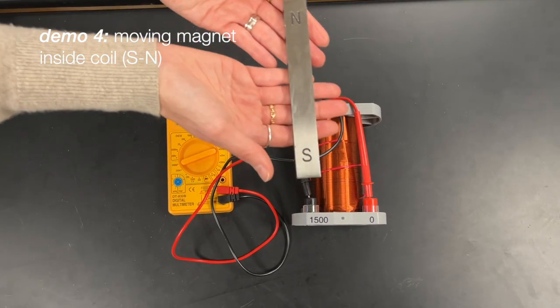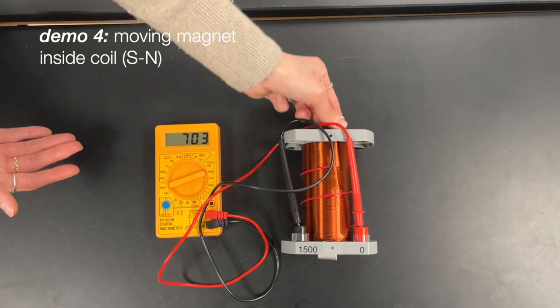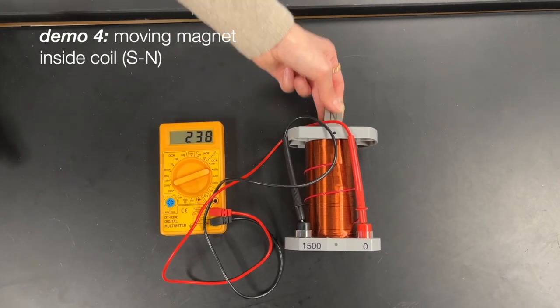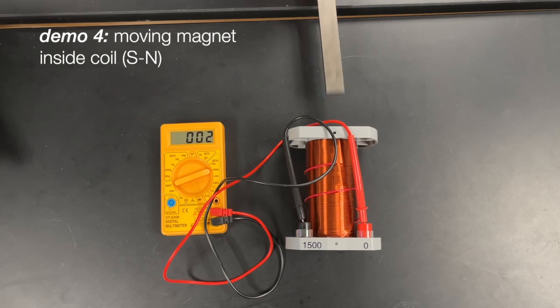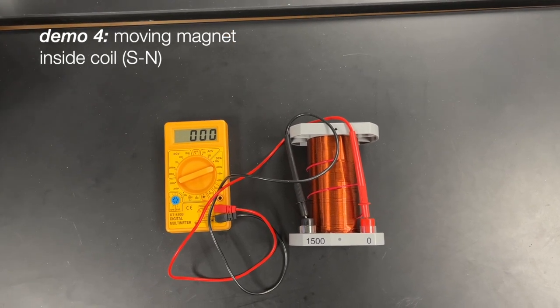Now what happens if I flip it, so now the south side is facing? Let's take a look. Again, when it goes in, is it positive or negative? Out - positive or negative? And the magnitude?